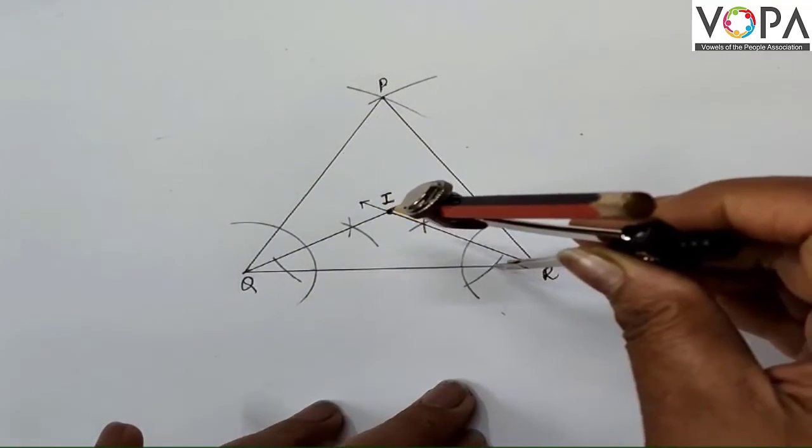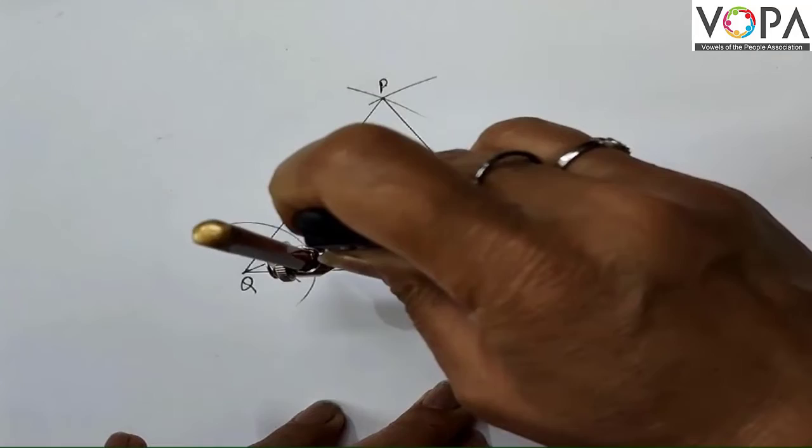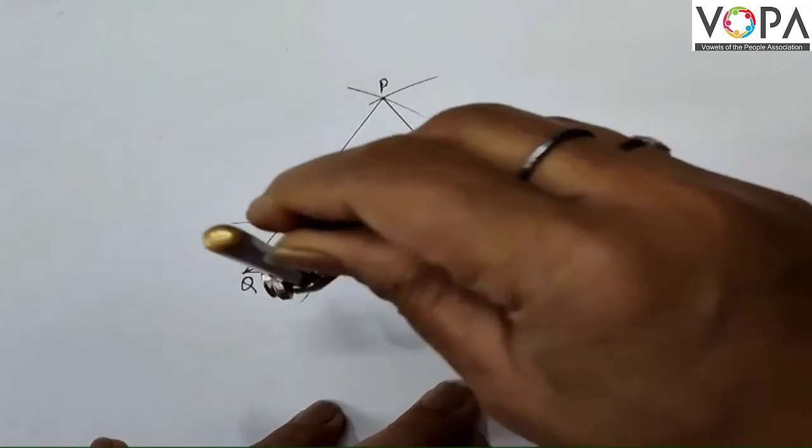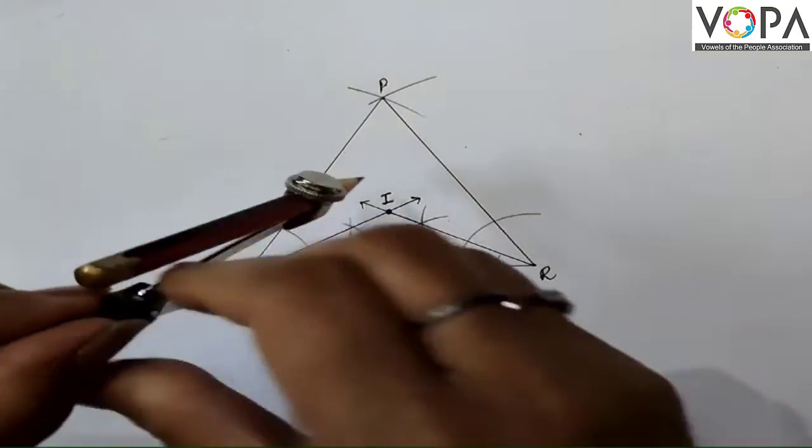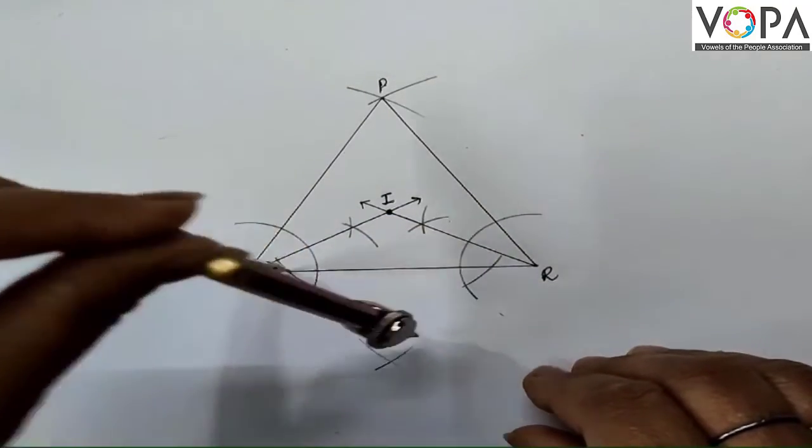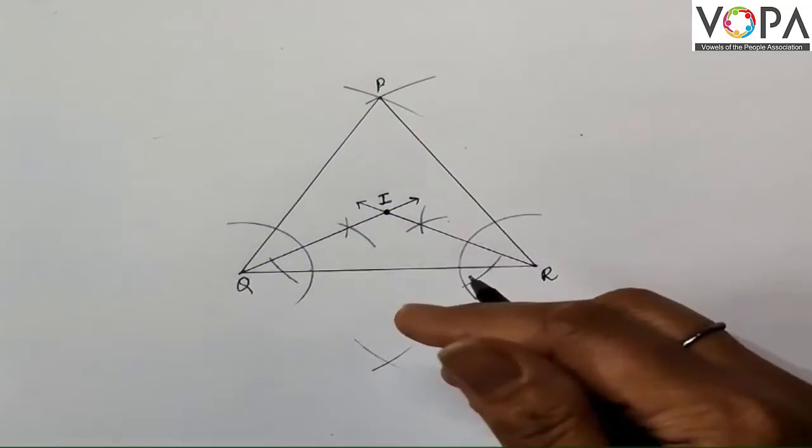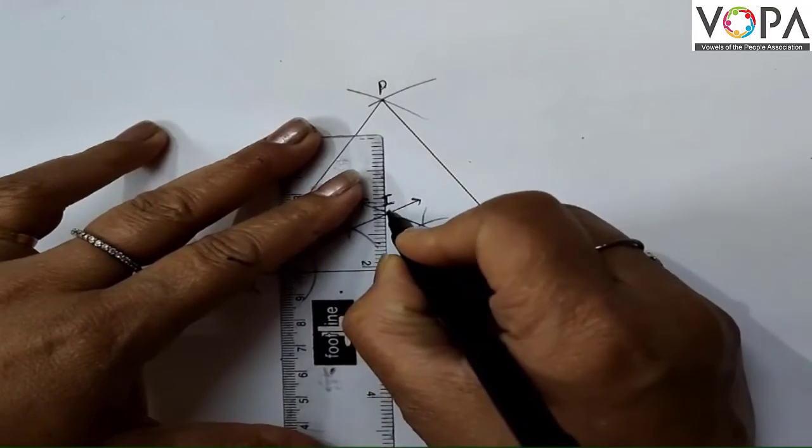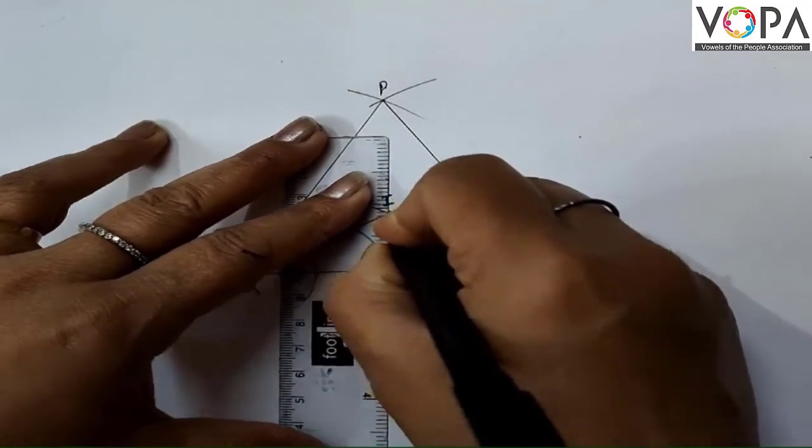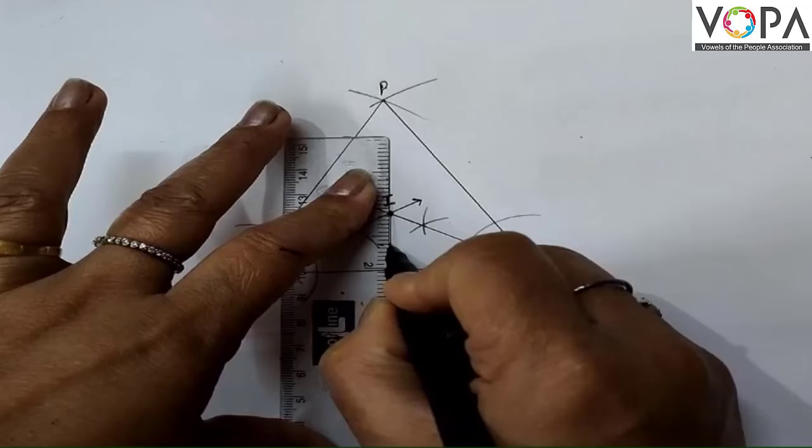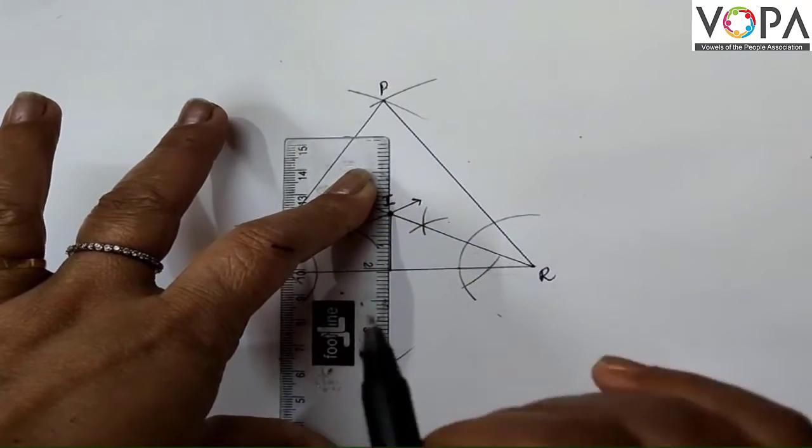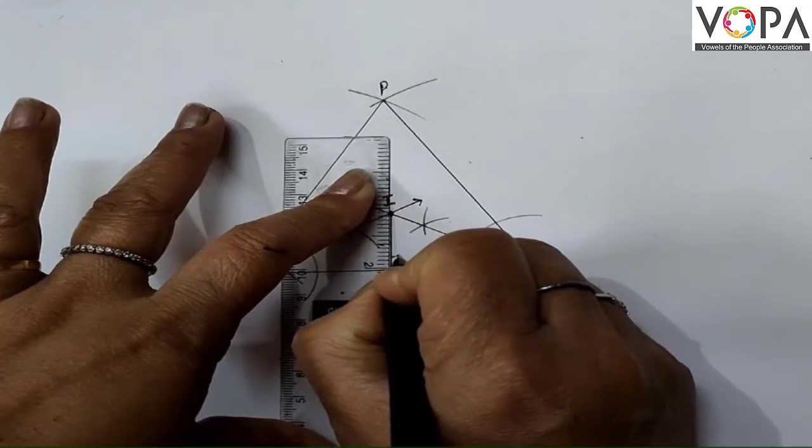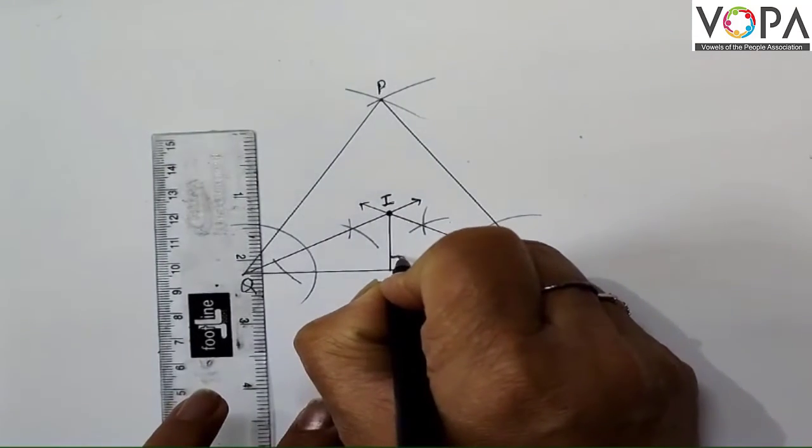From here, take more than half of this distance. Draw an arc here, and from here also draw an arc. Then join this. This is the line we need. Even if you don't draw it down, no problem. The radius we need is here. The perpendicular we need is here.